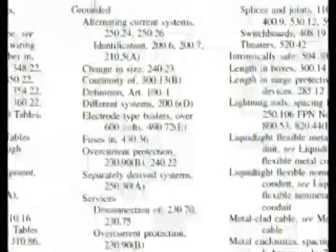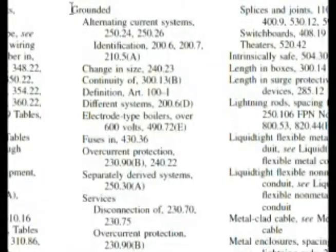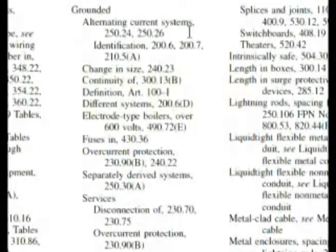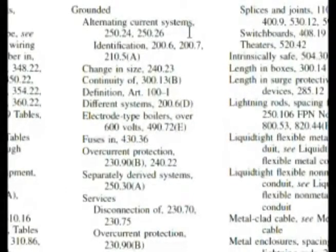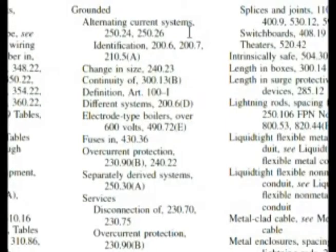Here we are in the index under conductors — grounded. Now, one thing you should look at right here: alternating current systems. It talks about a grounded conductor brought to service equipment with the phase conductors. If you've got phase conductors, you're using alternating current. So alternating current systems is something we want to look into.